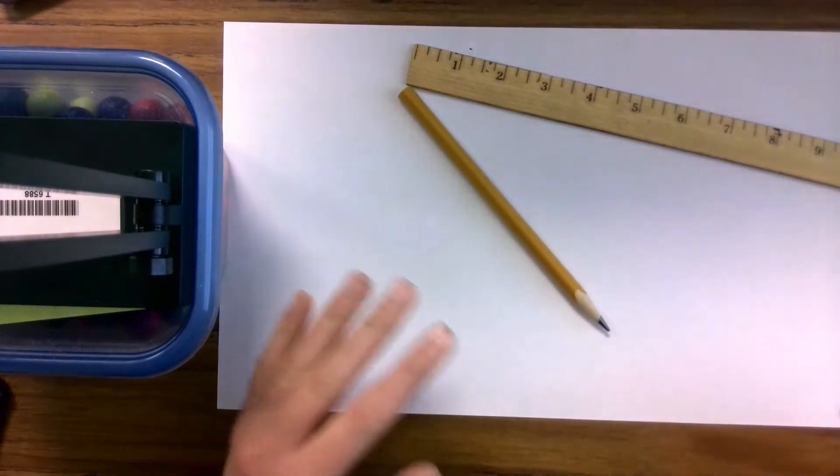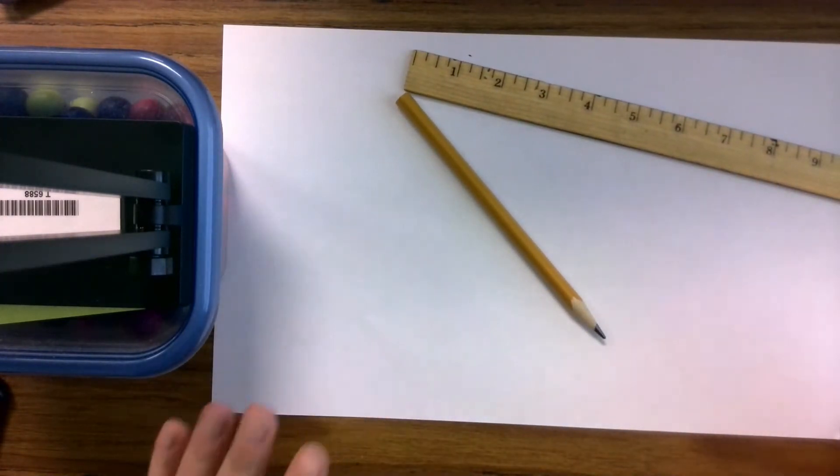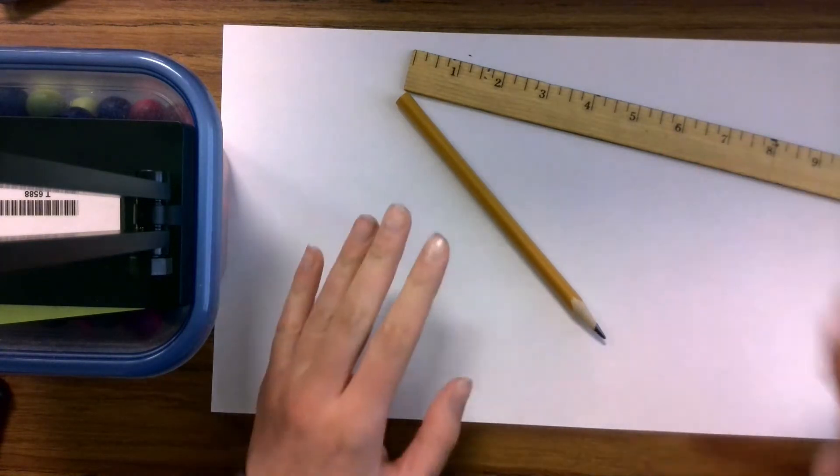But honestly, like when I was younger and I didn't have a ruler, I used things like the side of a notebook or whatever it is. You just need something to be a straight edge.